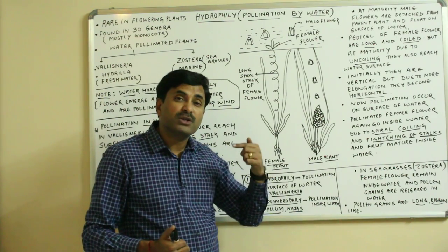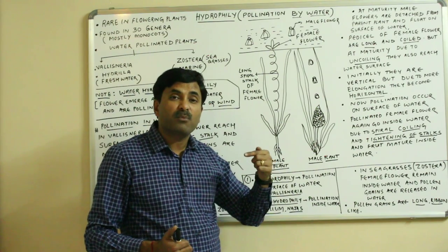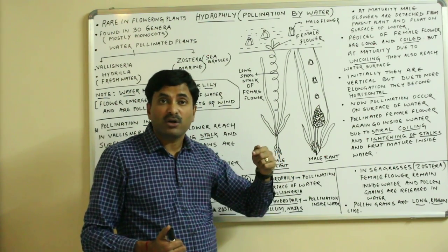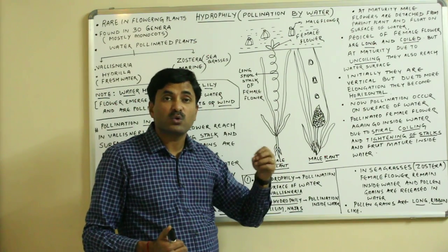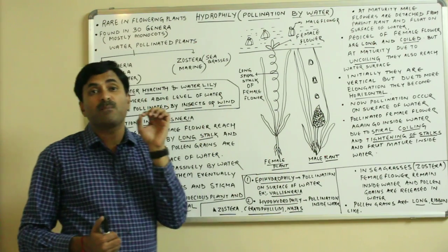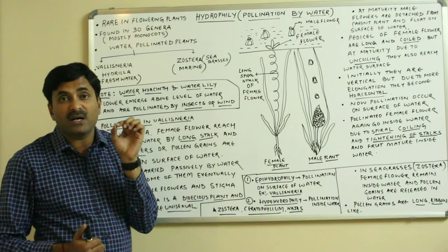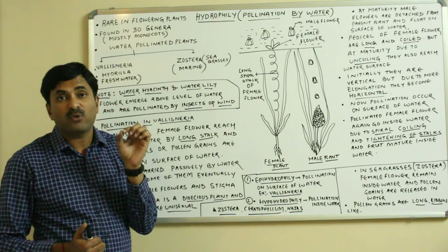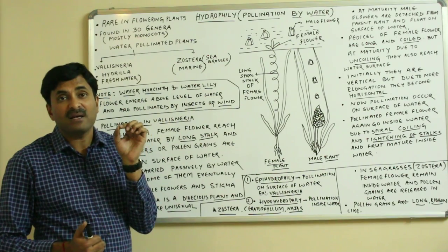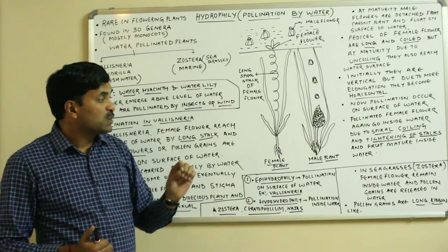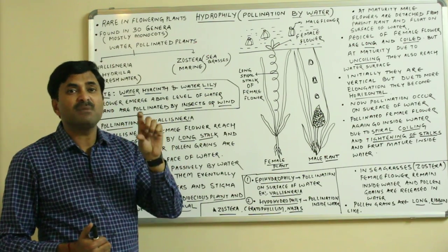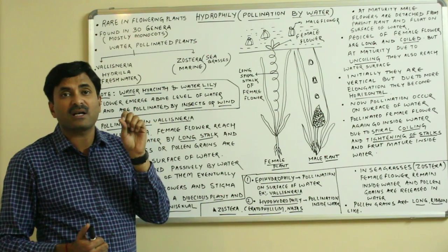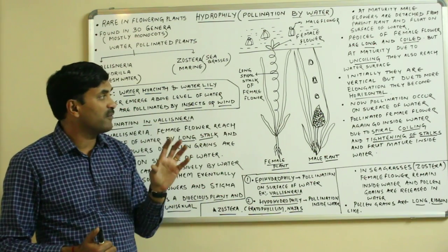A question arises: the pollen grains released in the water body — are they not wetted? The answer is that the pollen grains are covered by a mucilaginous covering, and therefore the pollen grains are protected from water. In most aquatic plants, pollen grains are covered by a mucilaginous covering.